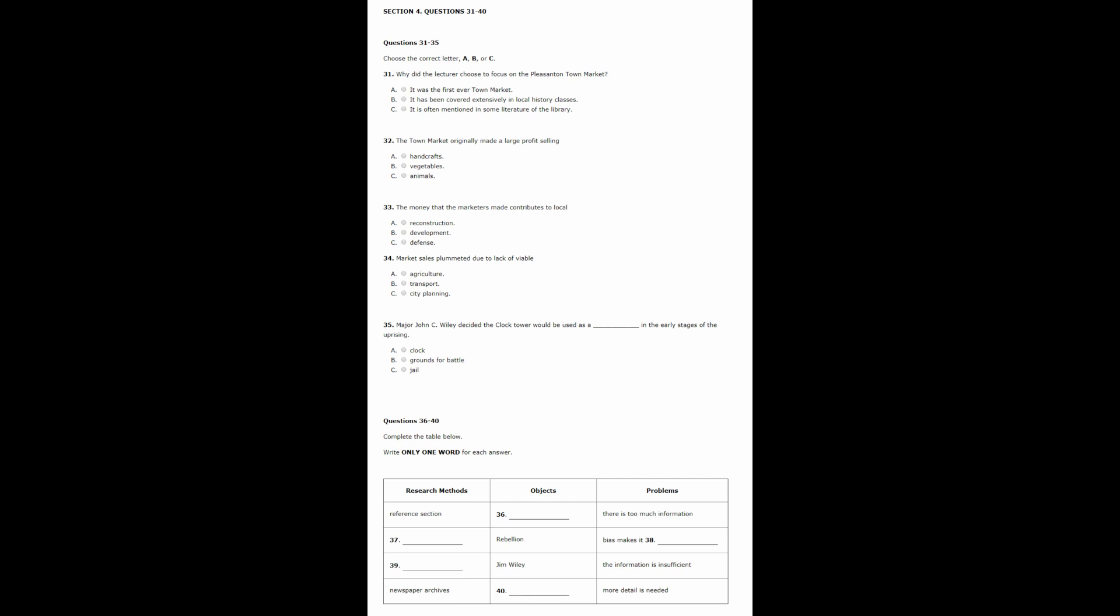Good afternoon. In the last few lectures, we've been covering the social and political pressures that influenced the rise of the Rebellion of 1679. Today, I would like to focus on the Pleasanton Town Market. Now, why are we talking all about some market? It's not like it was the first market ever, or even a particularly large market. The Pleasanton Town Market is important because it is often mentioned in the literature found in the library. If you have ever been there, you have probably seen all of the handcrafted items sold there now. But what was originally bought and sold in the town market? In the beginning, the market sold products such as meats, furs and simple tools. Over time, though, it became known as the place to find quality livestock.